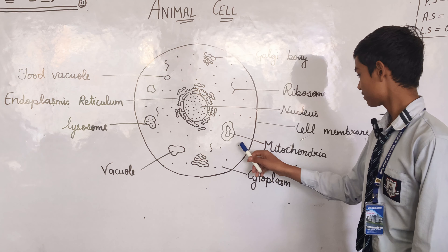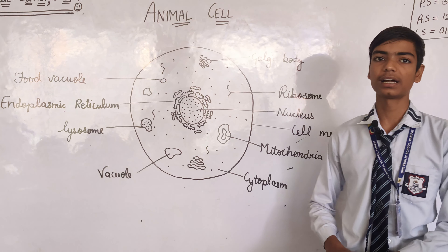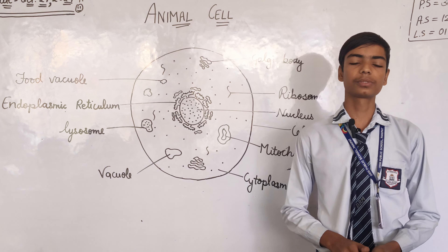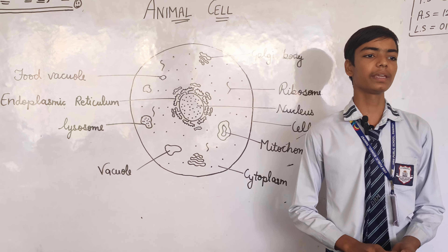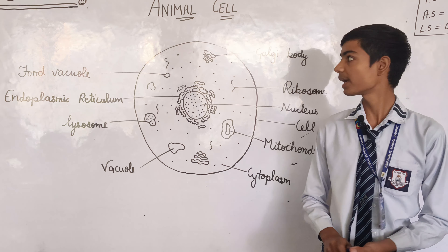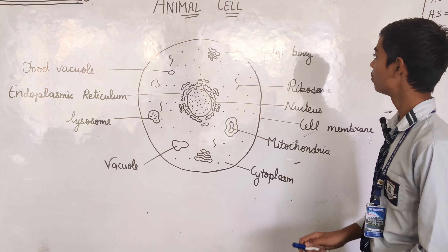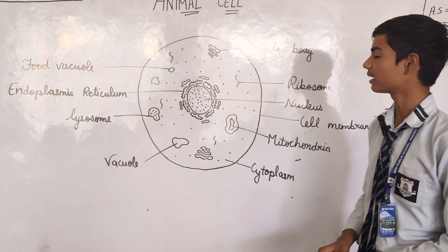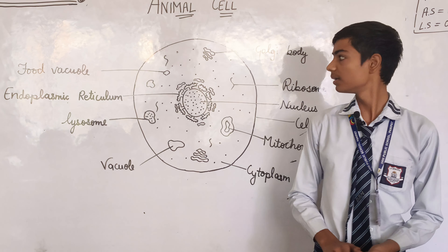This is mitochondria. Mitochondria is the powerhouse of the cell and it produces ATP — adenosine triphosphate. This is Golgi body. Golgi body is involved in the transport of material in the cell.